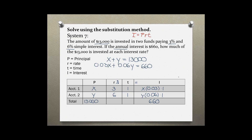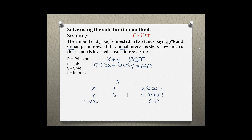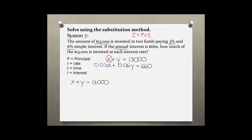Now I have my two equations and I don't need the table anymore. I'll use substitution to solve the system of linear equations. The first equation looks easiest, so I'll solve for X. X plus Y equals 13,000 — subtracting Y from both sides gives X equals 13,000 minus Y.